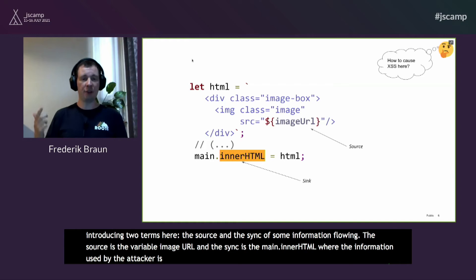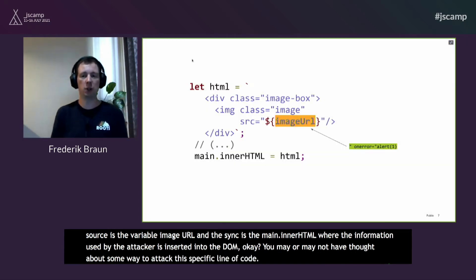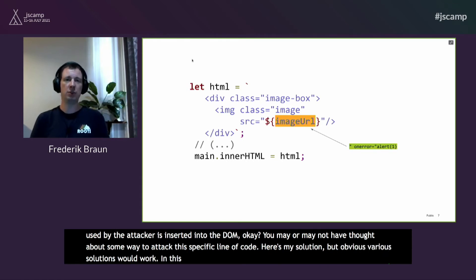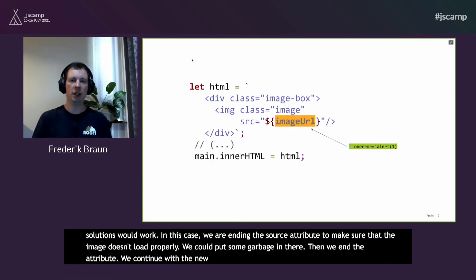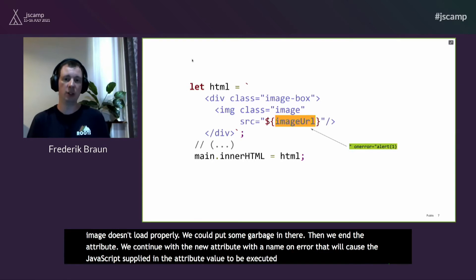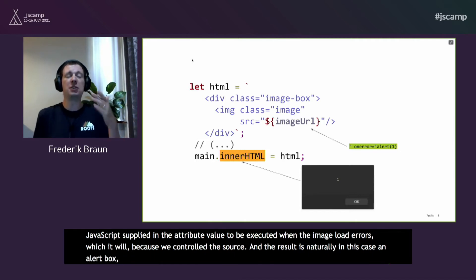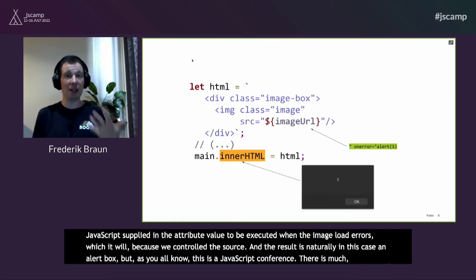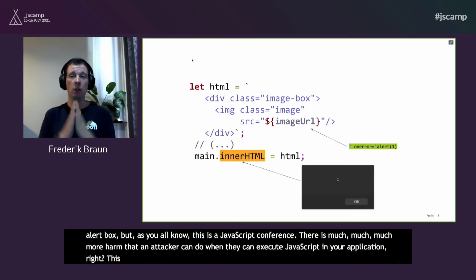Here's a solution — though various solutions would work. We end the source attribute to make sure the image doesn't load properly, then continue with a new attribute named onerror that causes the supplied JavaScript to execute when the image errors, which it would because we control the source. The result is an alert box. But as you know, there is much more harm an attacker can do when executing JavaScript in your application. This isn't just about an alert box — it's about taking control of your whole application.